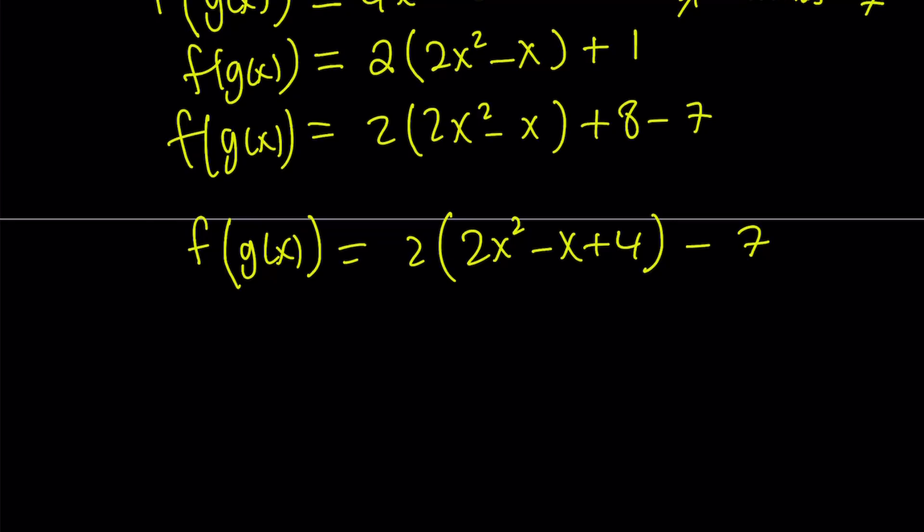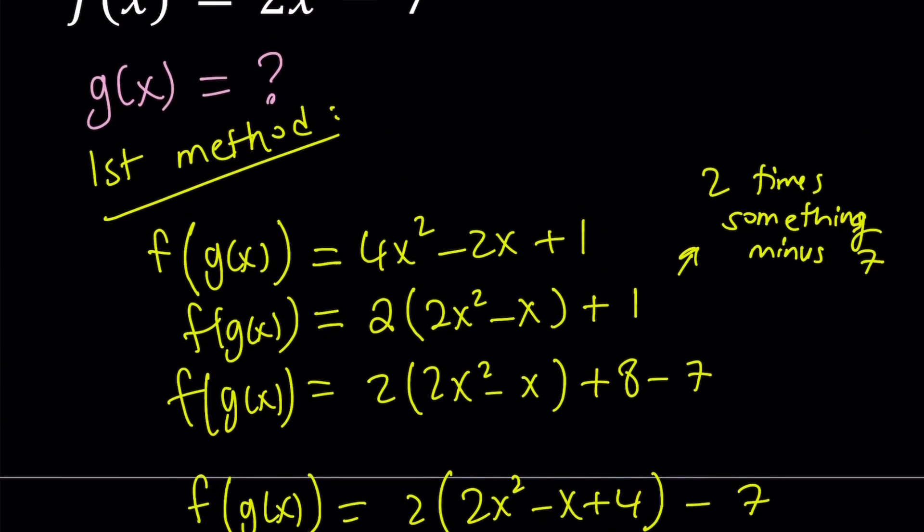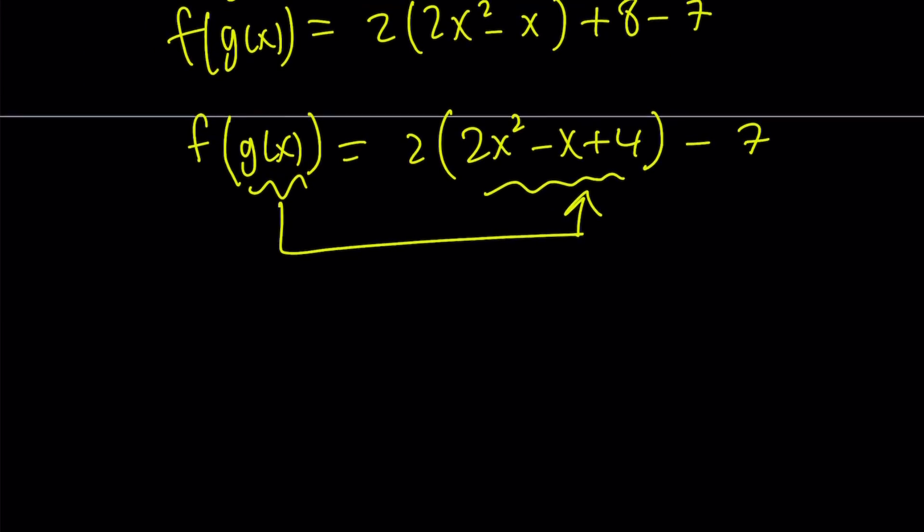And guess what? Since f is 2 times something minus 7 and this is something, that something is what g of x is. So automatically you get g of x from here. You can also look at it this way. f of g of x is going to be 2 times g of x minus 7 and so on and so forth.